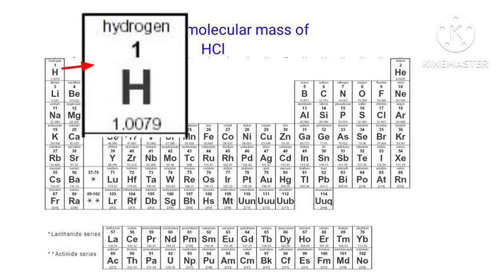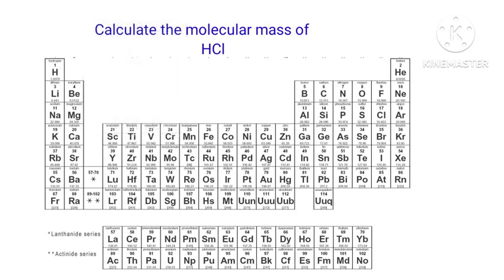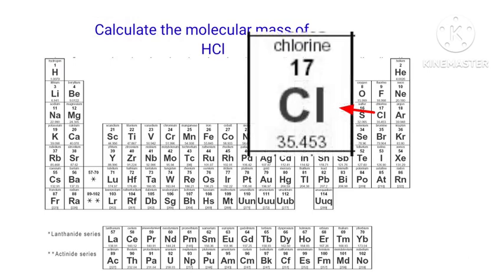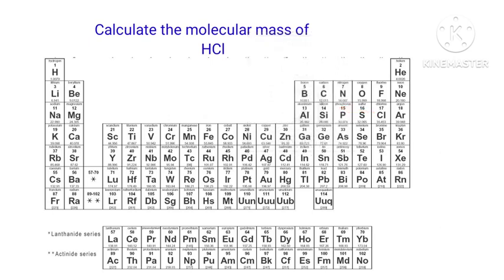The atomic mass of hydrogen is 1.0079. The atomic mass of chlorine is 35.453. In the HCl molecule, there is one hydrogen atom and one chlorine atom present.